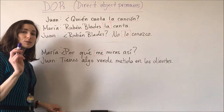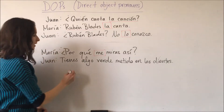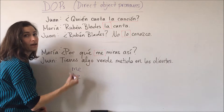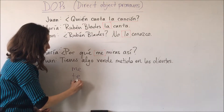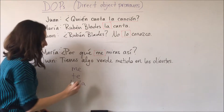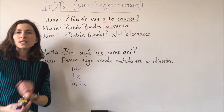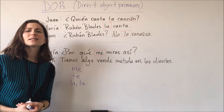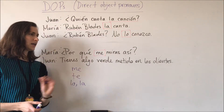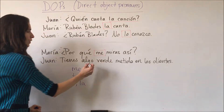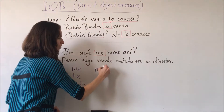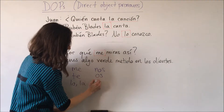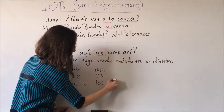Overall, the direct object pronouns that we can use in Spanish are: me for a mí; te for a ti; lo or la for a él, a ella, a usted, or nouns like el perro, la casa, el avión; nos for a nosotros; os for a vosotros; and los and las.